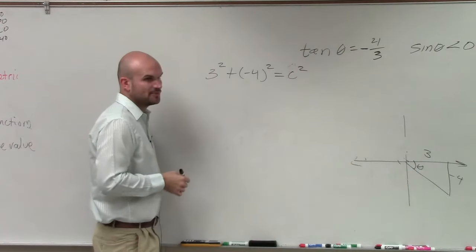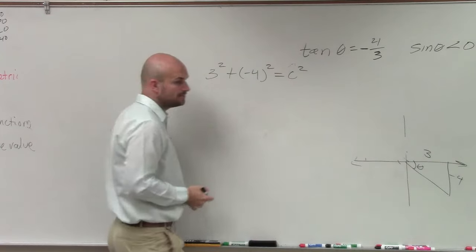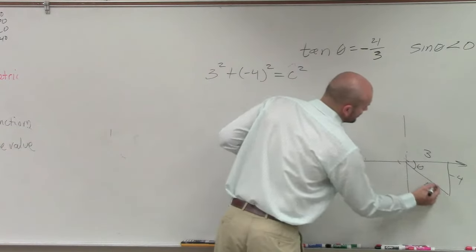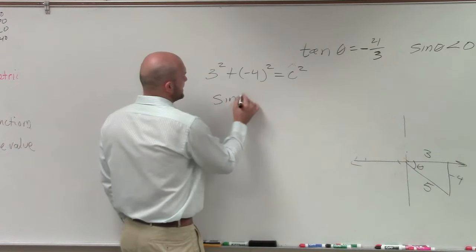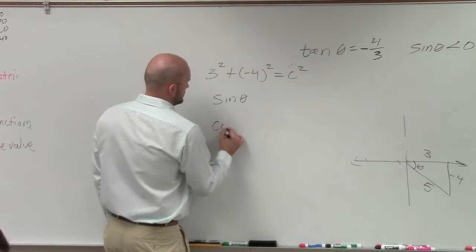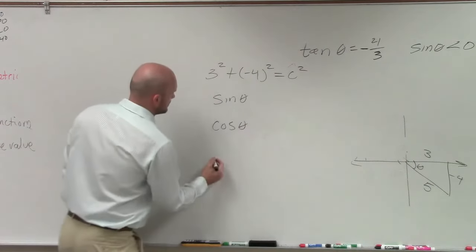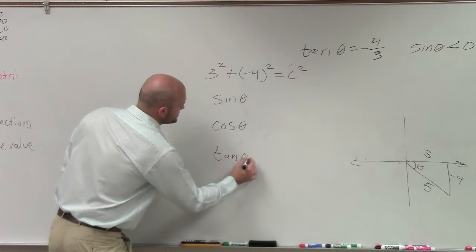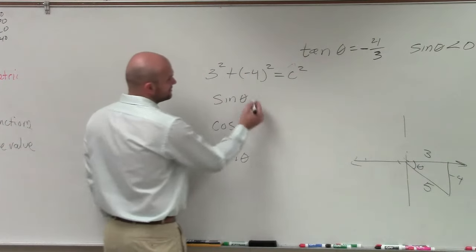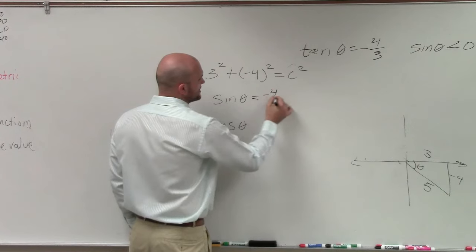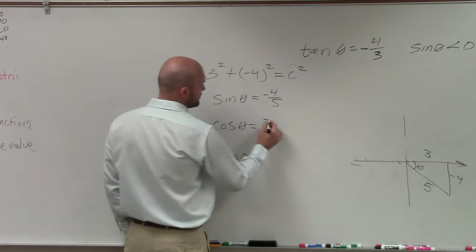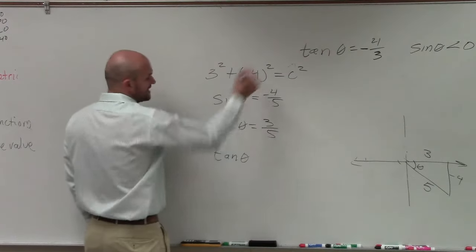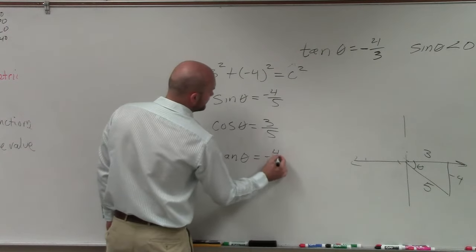Hopefully you guys know this is a perfect square or a Pythagorean triple. So therefore that's going to be 5. So now if I want to find the sine of theta, cosine of theta, and we already know what the tangent of theta is. So the sine of theta is going to be opposite over hypotenuse, which is negative 4 over 5. Cosine of theta, which is going to be 3 over 5. And the tangent of theta, we already said, was equal to negative 4 over 3.